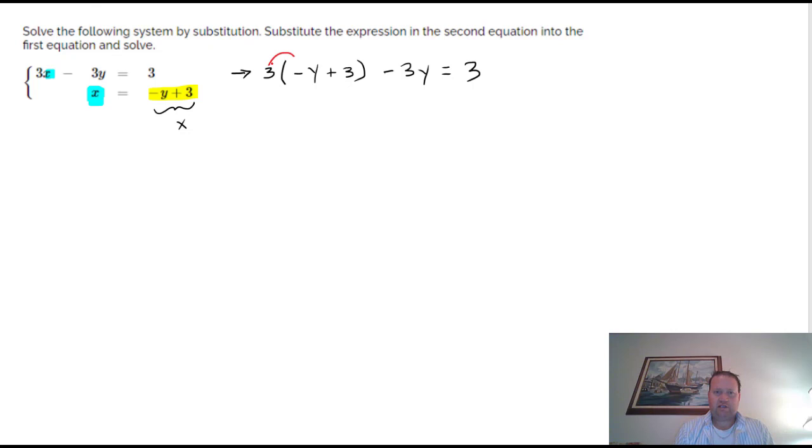So I'm going to go ahead and distribute the 3 since that's my next step. This right here becomes negative 3y and then also plus 9, and then another negative 3y equals 3. Let's go ahead, we got a couple of like terms right there. So we've got two negative numbers.